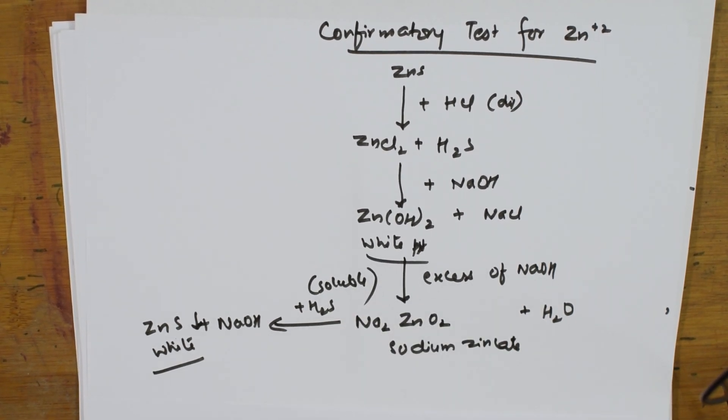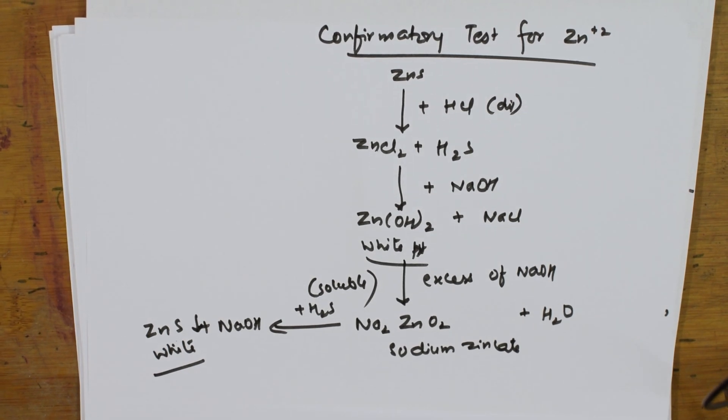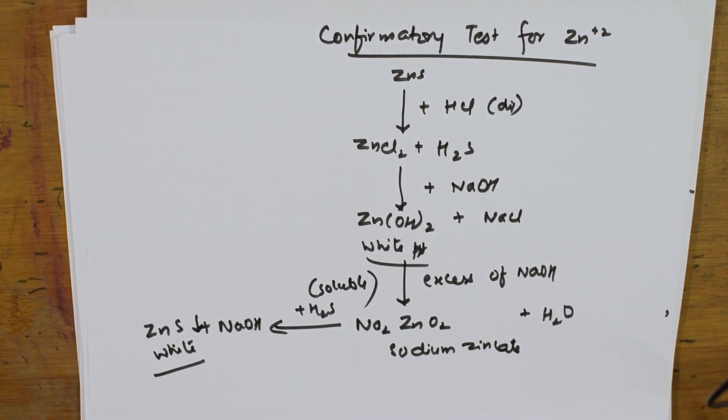This completes the Group 4 radicals analysis. Let us come back and meet with Group 5 radicals. Thank you for watching.